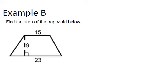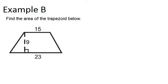In example B, again, find the area of the trapezoid below. So our formula is base 1 plus base 2, times the height, divided by 2.